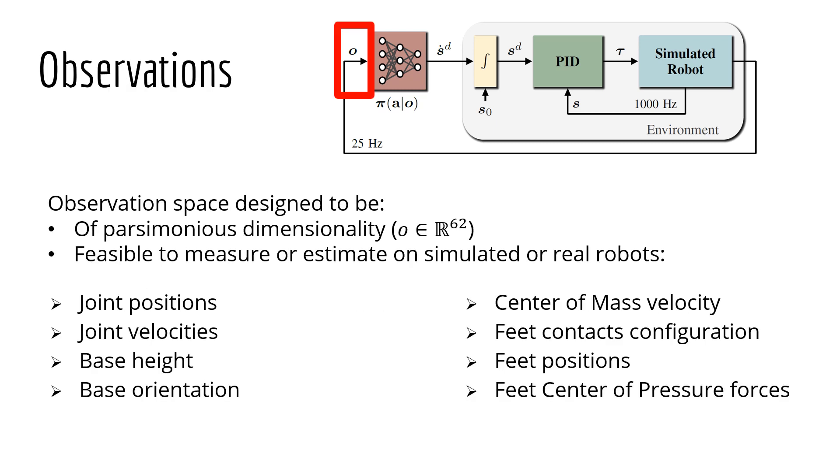We designed the agent's observation space following two main principles. First, we maintain parsimonious size, namely 62, to limit the effect of the curse of dimensionality. Secondly, we only included elements which can be measured or estimated on a simulated or physical humanoid robot. In particular, we included joint positions and velocities, base height and orientation, center of mass velocity, feet contact configuration, feet positions, and feet center of pressure forces.